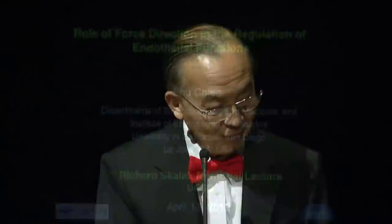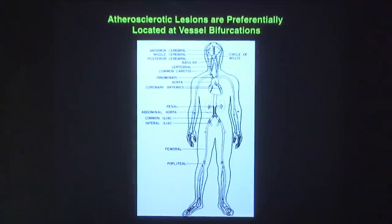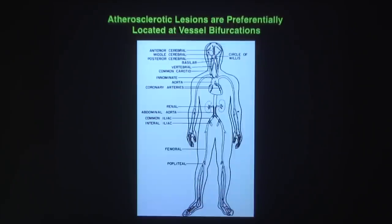Now I turn to the lecture itself. The title is 'The Role of Force Direction in the Regulation of Endothelial Functions.' Atherosclerosis is an important pathology that underlies many diseases such as myocardial infarction and stroke. These lesions are not found everywhere — the straight part of the aorta is relatively free of lesions. The lesions are usually found in the bifurcations and other areas of complex flow.